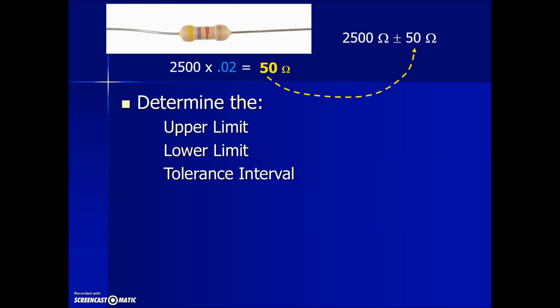Once we have the 50 ohms, we're ready to determine the upper limit. We'll do the plus portion: 2,500 plus 50 means the maximum amount acceptable would be 2,550 ohms. We'll do the minus or subtraction of that variation from our standard measurement to get the lower or minimum value: 2,500 minus 50 is 2,450 ohms.